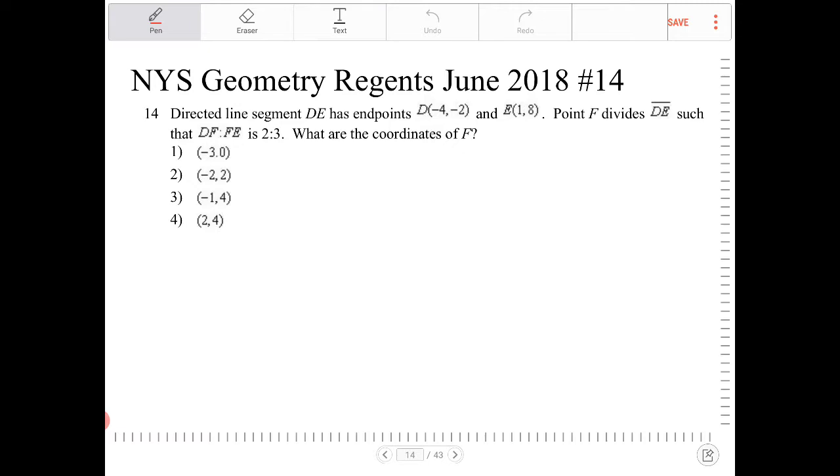So D is (-4, -2). I'm going to say D is going to be like right here. And E is going to be right here. So it is going to be to the right of D and above it. And how I know that is because it's due to the X and Y coordinates there. 1, positive 1, is to the right of negative 4, and 8 is above negative 2.